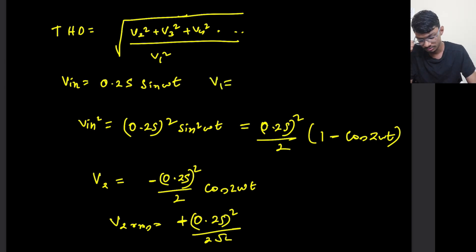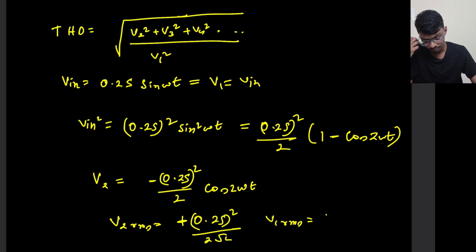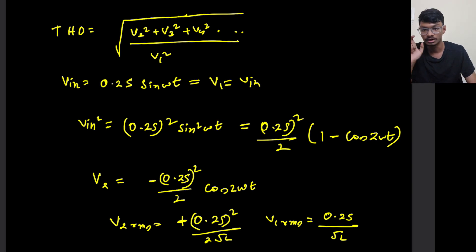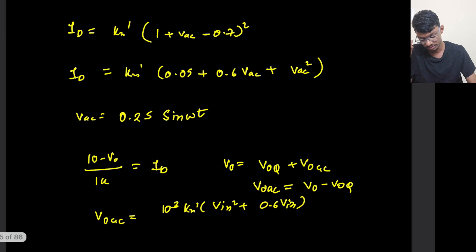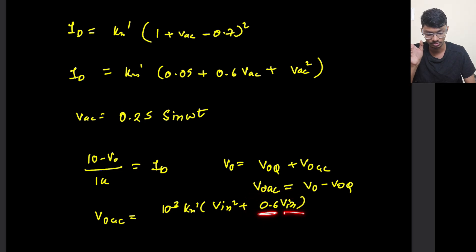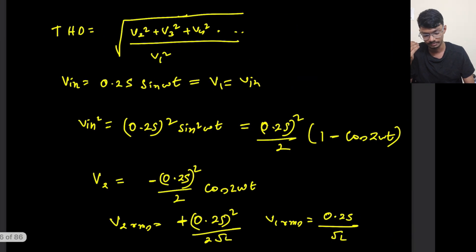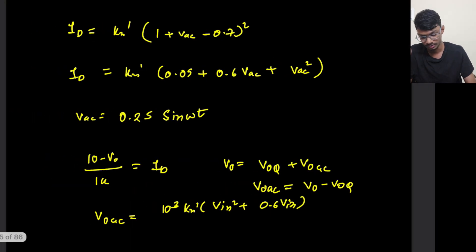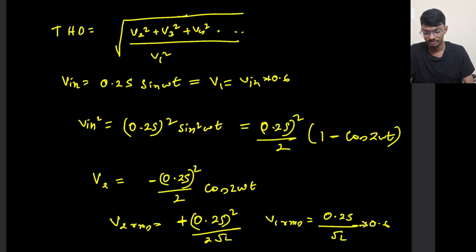The RMS of the fundamental component: V₁_rms = 0.25 / √2. However, looking at the output voltage equation, the fundamental component is scaled by 0.6, so V₁_rms is actually 0.6 times V_in, making V₁_rms = 0.6 · (0.25 / √2). This is the fundamental component we use in the THD formula.